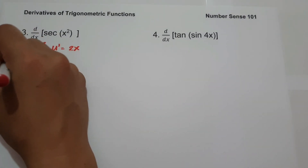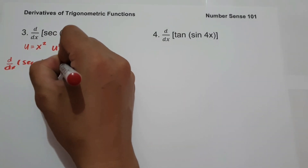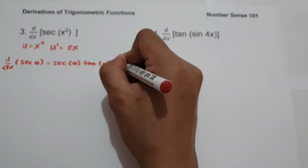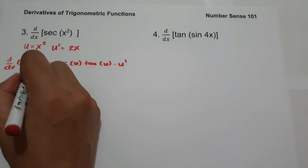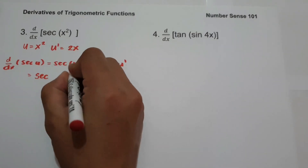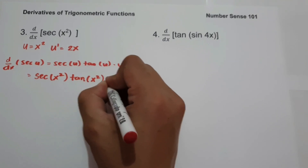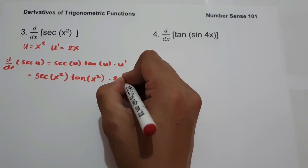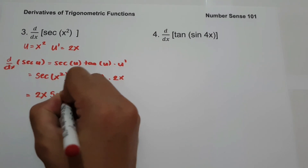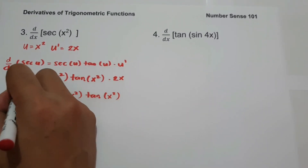The derivative of sec(u) is sec(u) times tan(u) multiplied by u'. So the derivative of sec(2x²) gives us sec(x²) times tan(x²) multiplied by u', which is 2x. Simplifying, our final answer will be 2x · sec(x²) · tan(x²).